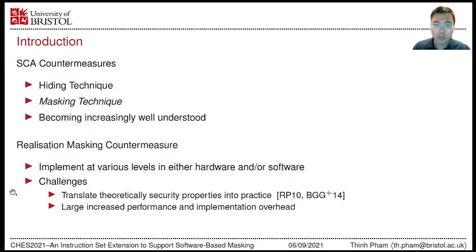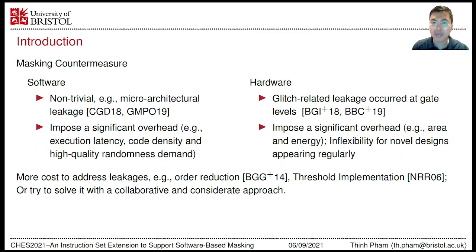For a masking implementation, we have at least two significant challenges. First, it must translate theoretical security properties into practice. Second, it suffers large increases in performance and implementation overheads. More specifically, implementing software-based masking could be a non-trivial task to achieve guaranteed security due to leakages that stem from the underlying microarchitecture. Such implementations also suffer from significant overheads in execution latency, code density, and high-quality randomness demand.